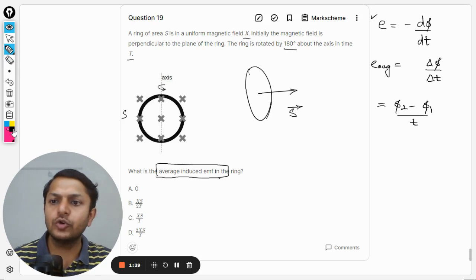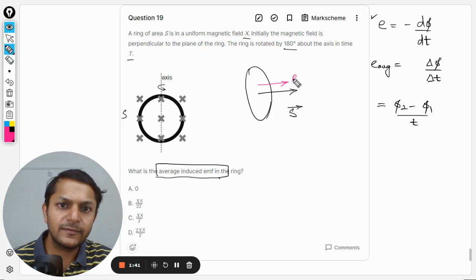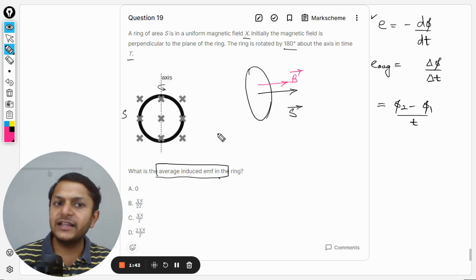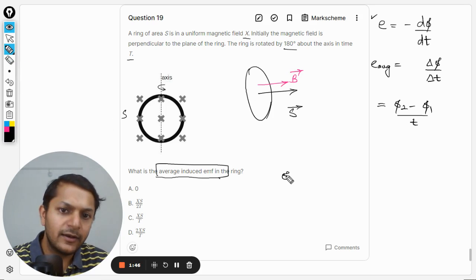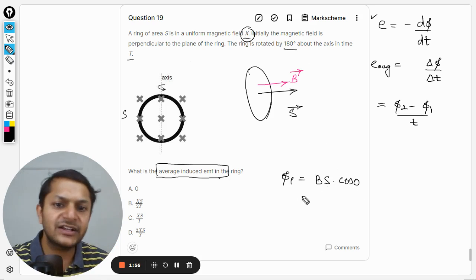So let us take it S. The magnetic field in the first case is also in the same direction, so the angle is zero. So accordingly we can find φ₁. So φ₁ will be...